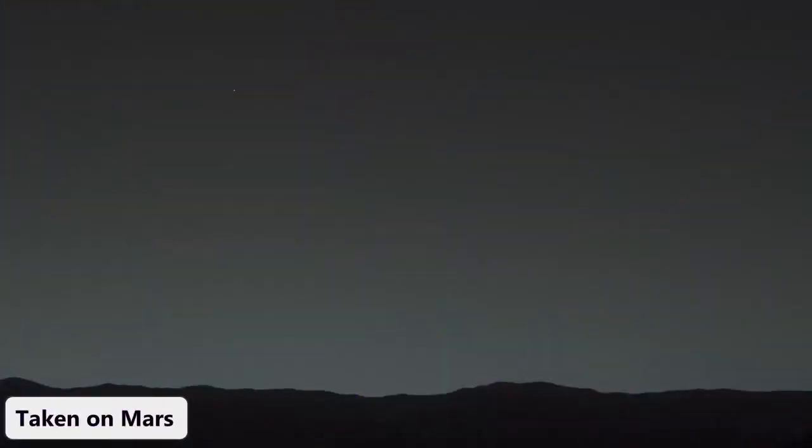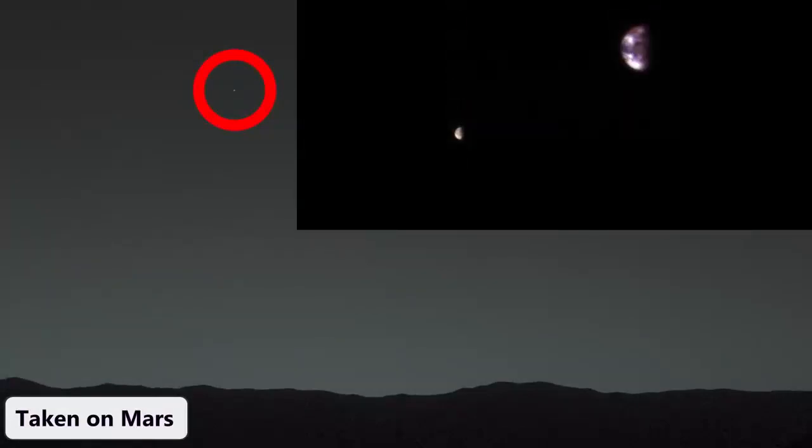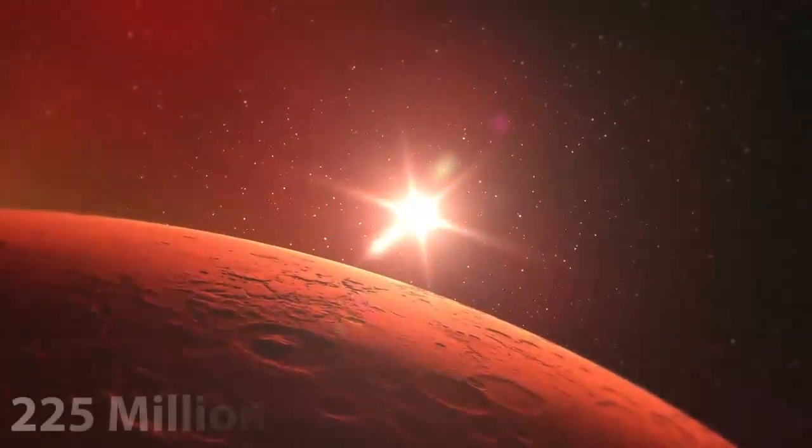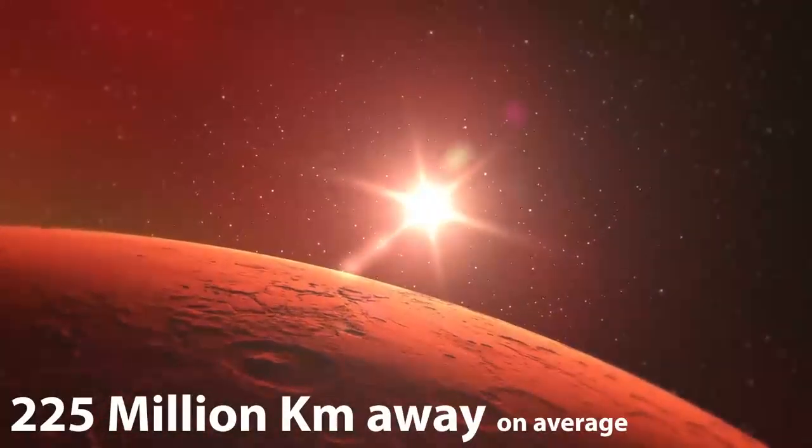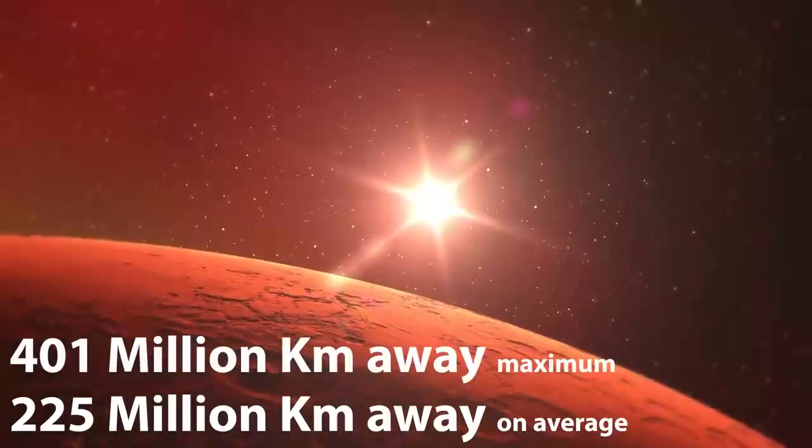This is a photo that was taken on Mars, and that tiny dot that you see there is Earth as seen from the Martian surface. On average, Mars is an incredible 225 million kilometers away from Earth, but that distance can be as high as 401 million kilometers.